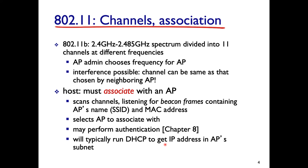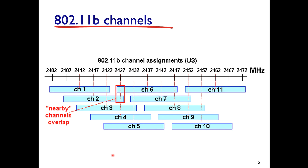The 2.4 GHz band is divided into 11 channels. Channel 1 starts at 2.412 GHz, channel 2 at 2.417 GHz, and so on, each separated by 5 MHz. Many channels overlap each other, but channels 1, 6, and 11 do not overlap — there are clean gaps between them. As a result, most access points are configured to use channel 1, 6, or 11, though manual configuration to any of the 11 channels is possible.